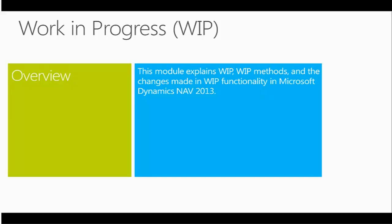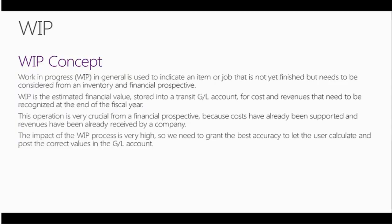In today's presentation, I will explain what WIP is, what WIP methods are and how to use WIP, and I will analyze the changes made in the WIP functionality. WIP is Work in Progress. In general, it is used to indicate items or jobs that are not finished yet, but need to be considered from an inventory or financial perspective. For a job, WIP is the estimated financial value stored into a transitional GL account for costs and revenues that need to be recognized at the end of the fiscal year. This operation is very crucial because costs have already been supported and revenues already received by the company. The impact of the WIP process is very high, so we need to grant the best accuracy to let the user calculate and post in the GL account the correct values.